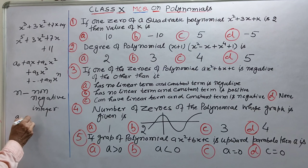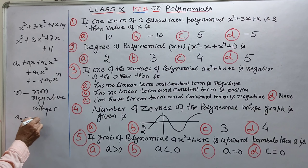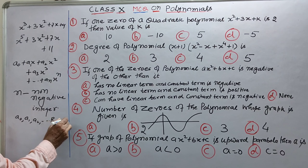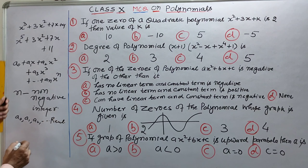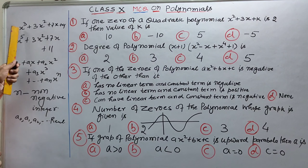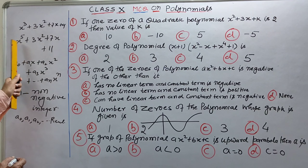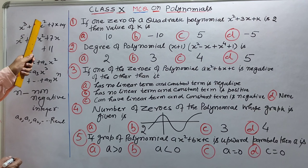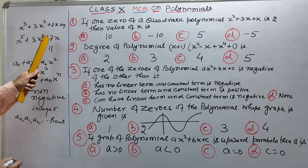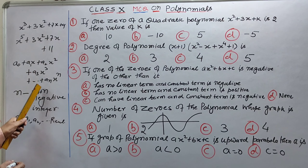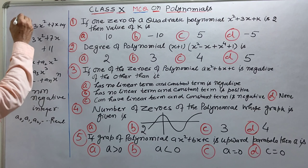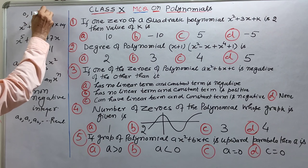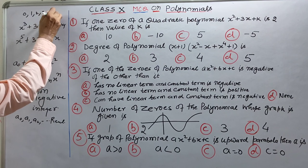n, a0, a1, a2 — yeh sab real numbers hone chahiye. Matlab inke jo coefficients honge woh real numbers honge, aur inki jo powers hongi woh non-negative integers hongi. Non-negative integers means 0, 1, 2, 3, 4.